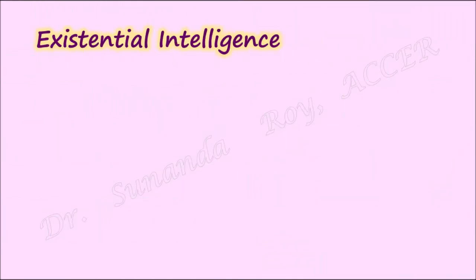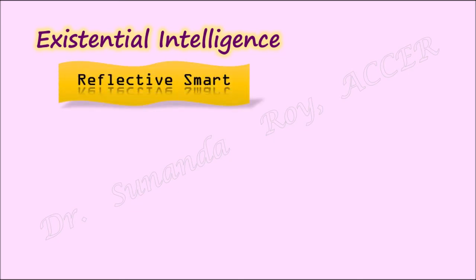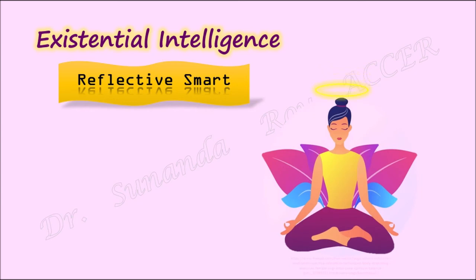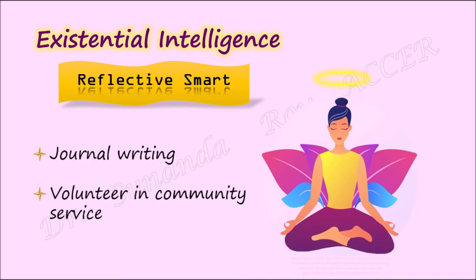Gardner added existential intelligence after an additional two decades of research since he had introduced the multiple intelligences. Existential intelligence is also known as reflective smart. This intelligence encompasses the ability to pose and ponder over questions regarding existence, including life and death. This intelligence is dominant in philosophers and religious leaders. Activities like journal writing, volunteering in community services, or as simple as asking questions could help students enhance existential intelligence.